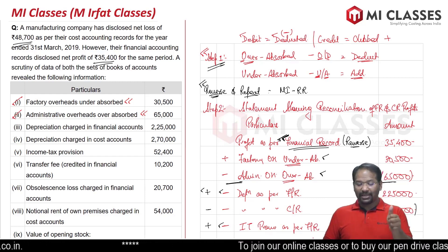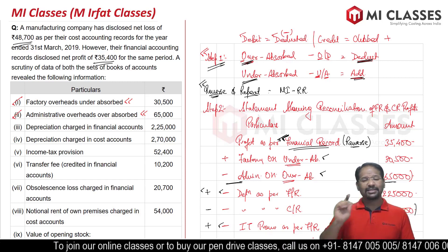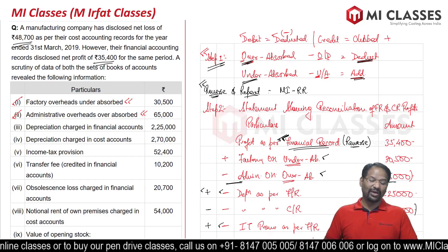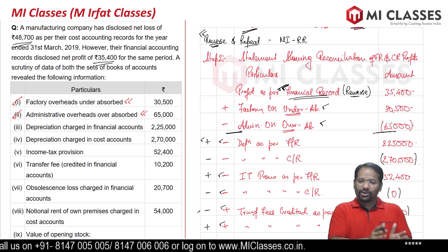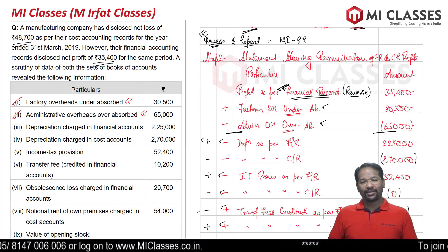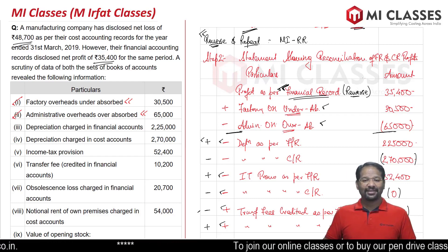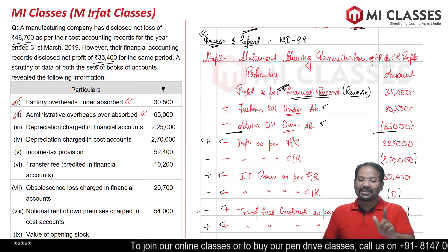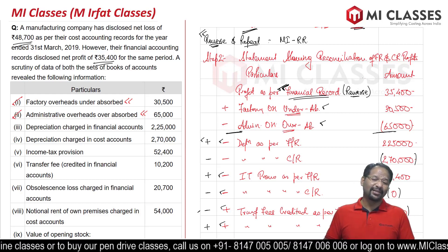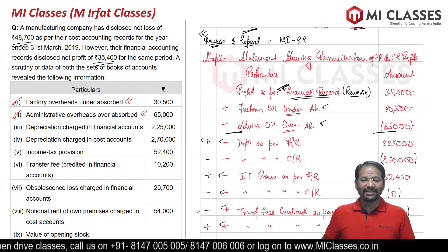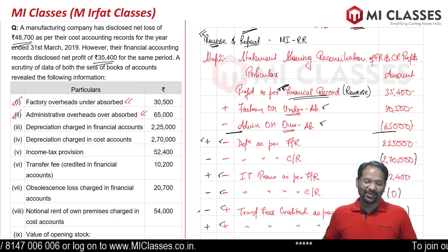To summarize: break the question into two steps. Step one — OD and UA: if over absorbed, deduct; if under absorbed, add. This applies when starting with financial accounting profit and ending with cost accounting profit. Step two — debit means deducted, credit means clubbed or added. Then apply the reverse and repeat method. Every question will comfortably give you the answer. This is Irfath — bye bye, see you in the next lecture with more interesting concepts. Take care!